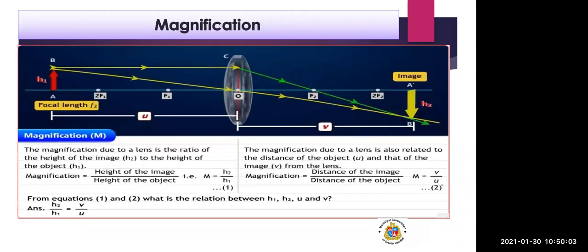Now comes magnification. Magnification due to a lens is the ratio of the height of the image H2 to the height of the object H1. Magnification tells us how much the image is enlarged. In the picture, AB is the object and A-dash B-dash is the image.